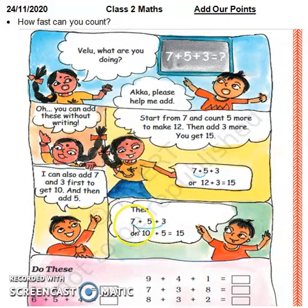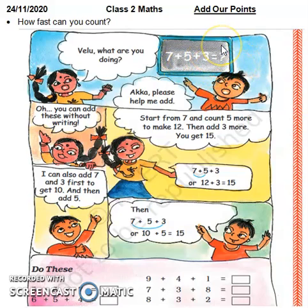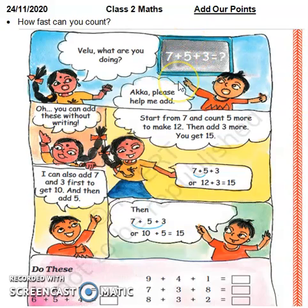तो बेटा, जैसे हमने पिछली एक्सरसाइज में भी किया था — जो नंबर दिया है उसके बाद count on करना है। जैसे 7 plus 5 plus 3 दिया है — यह छोटे-छोटे नंबर हैं जिनको लिखकर count करने की ज़रूरत नहीं है। अगर हमें कोई कहता है 7 plus 5 plus 3, तो हम पहले 7 के आगे 5 और गिनेंगे। Count on मतलब 7 से आगे — 7 plus 5 तक।